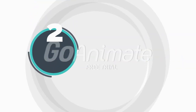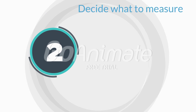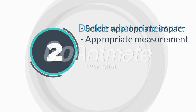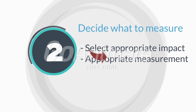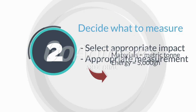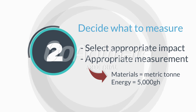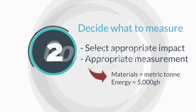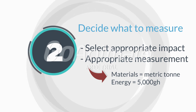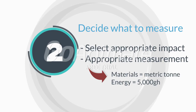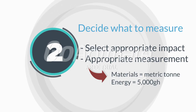Step 2: Decide what to measure. Select appropriate impacts such as materials, water, energy, etc. Use appropriate measurements — for example, if using materials, use metric tons; if measuring energy use, use kilowatt-hours or gigajoules of electricity.